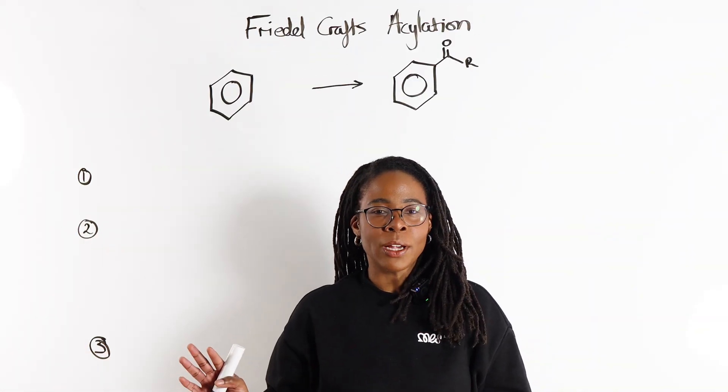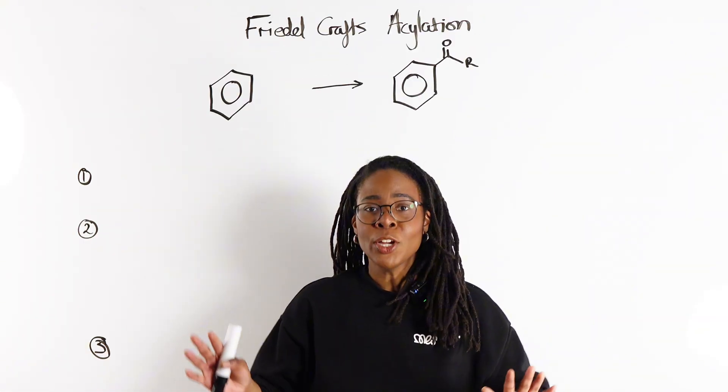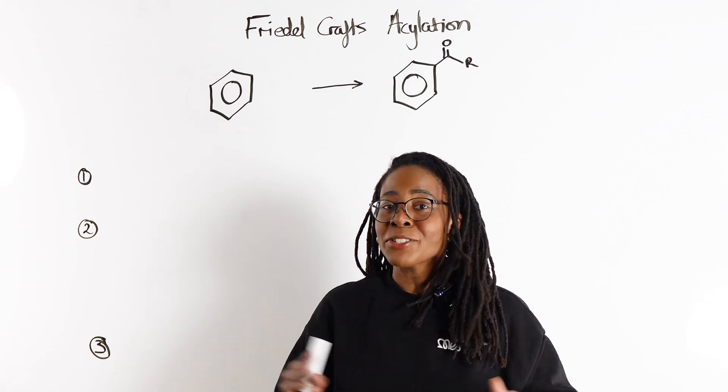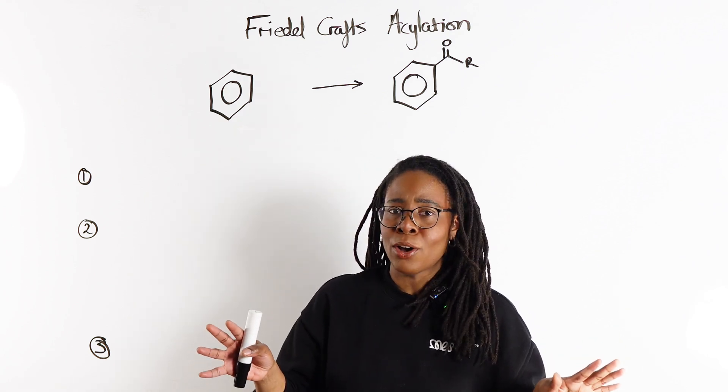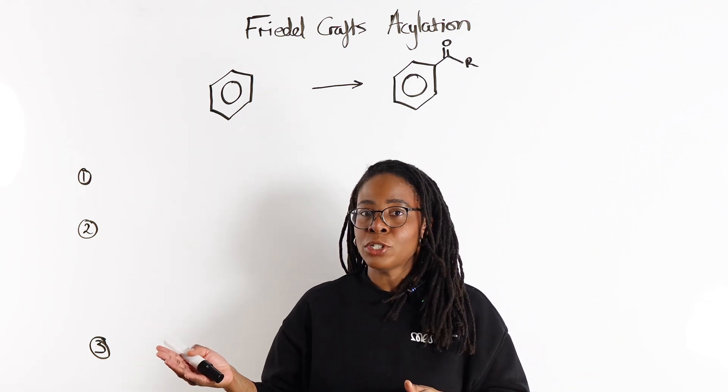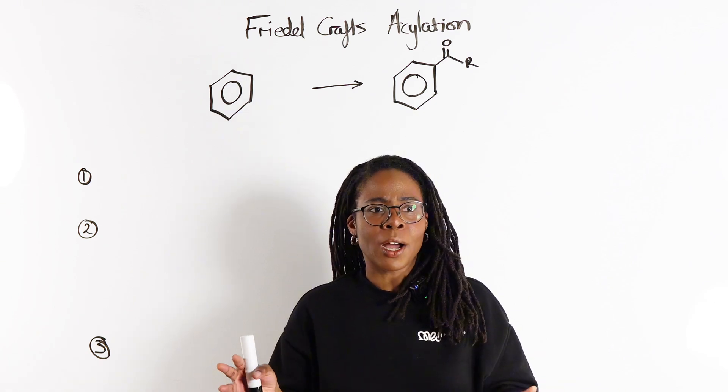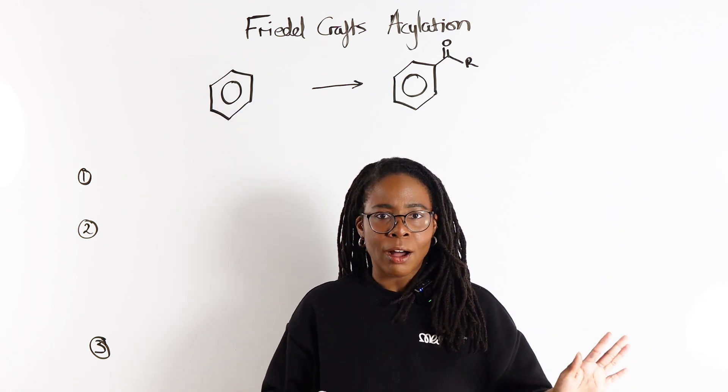Now in A-level chemistry, whenever we are doing reactions with benzene, we should jump for joy because there is only one mechanism that we need to know, which is electrophilic substitution. So the only question then becomes, which electrophile are we using?